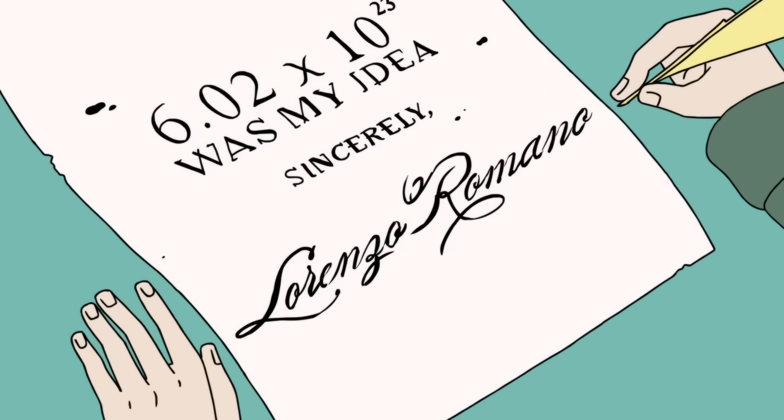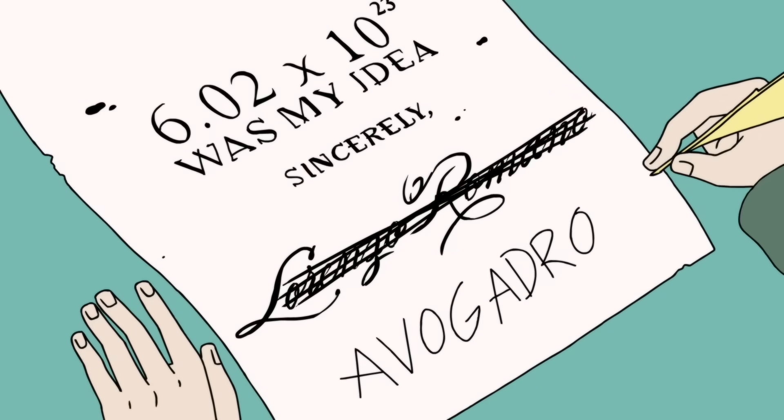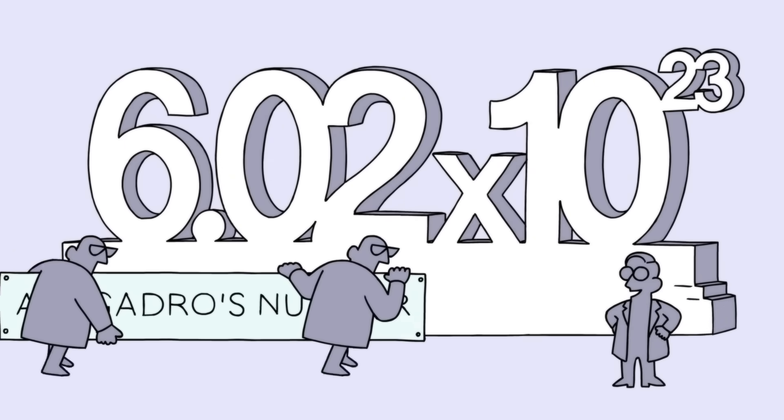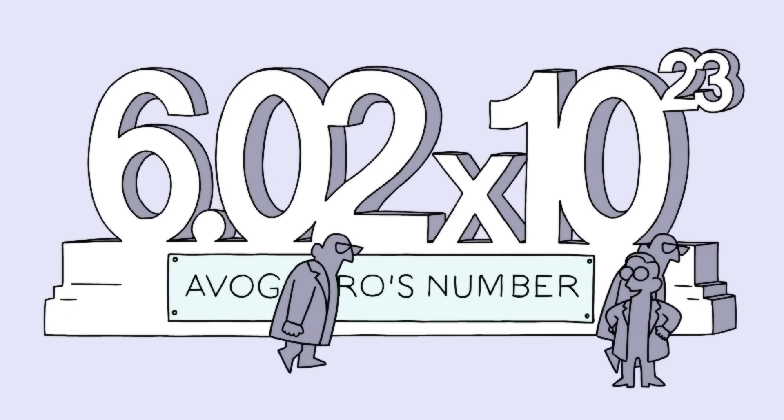Since Avogadro was the first one to come up with this idea, scientists named the number 6.02 times 10 to the 23rd after him. It is simply known as Avogadro's number.